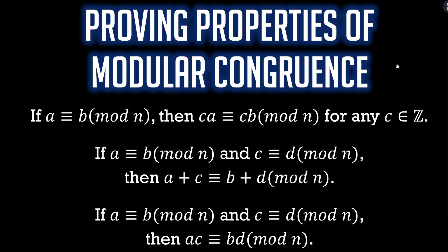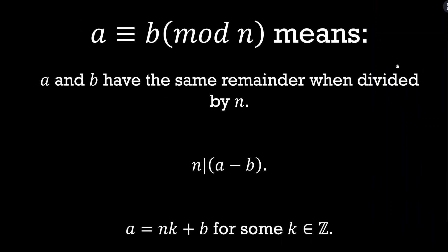Let's go ahead and jump into it. First, let's quickly review what it means to say A is congruent to B mod N. A video will pop up right now where I introduced this idea, went through some examples, and talked about three definitions and proved they were equivalent. So if you have no idea what this means, go back to that video first.